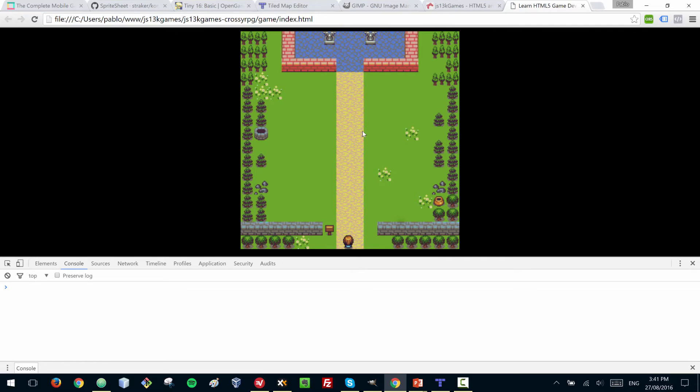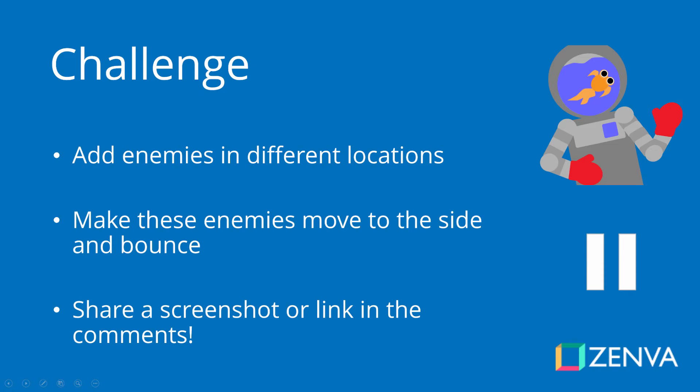Now it's challenge time! Your challenge is to add enemies, place them in different locations, and make them move side to side and bounce. This is similar to what you did with the rectangle — create two sprites, one for each enemy, and add if statements to check whether they need to bounce. Once done, take a screenshot or upload your game and share it in the comments. Pause the video and work on your challenge.